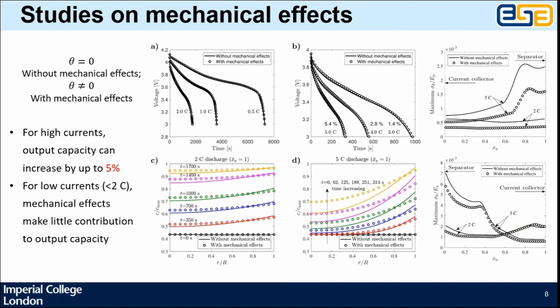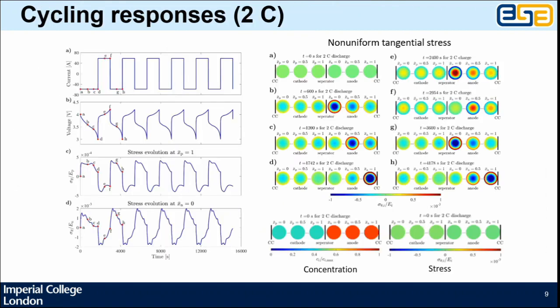We have studied the mechanical effects on the output capacity. The results show that for high currents, the output capacity can increase by up to 5%, while for low currents there is very little difference.